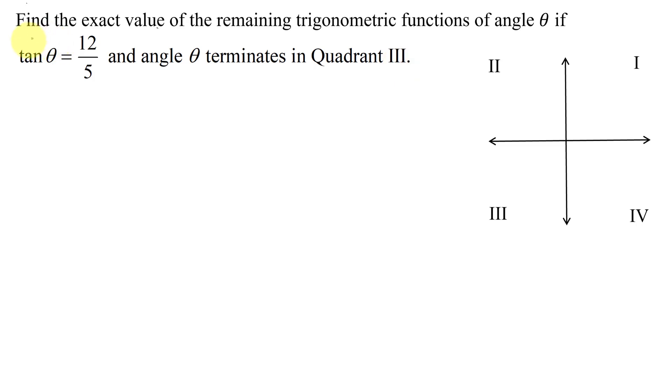The easiest trig function to find for angle theta is the reciprocal of the tangent function, and that is the cotangent function. So the cotangent of theta is just 1 divided by the tangent of theta.